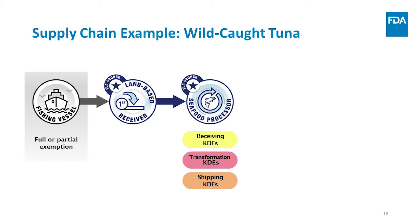In this example, the seafood processor is going to transform the tuna from whole fish into tuna steaks for sale at a restaurant. This is a transformation event. The seafood processor is a TLC source and must assign a TLC to the tuna steaks. The seafood processor must also keep transformation KDEs. As part of these transformation KDEs, they must maintain records containing the incoming traceability lot codes for the tuna and link that information with the traceability lot code that they assign to the new lot of tuna steaks.